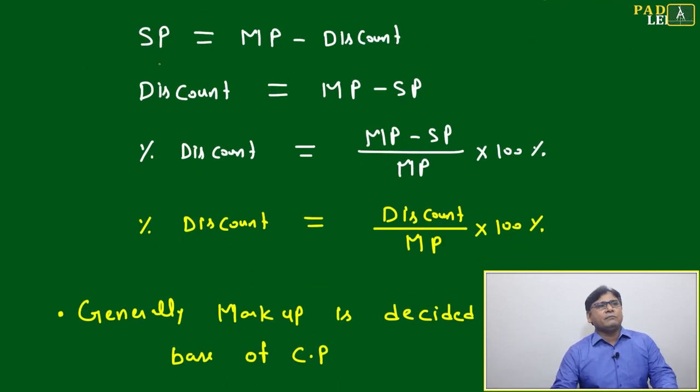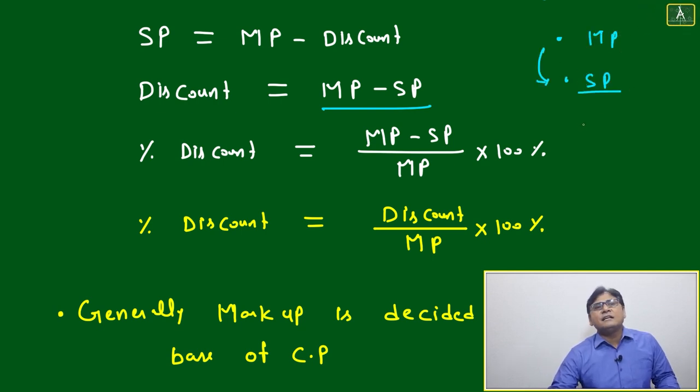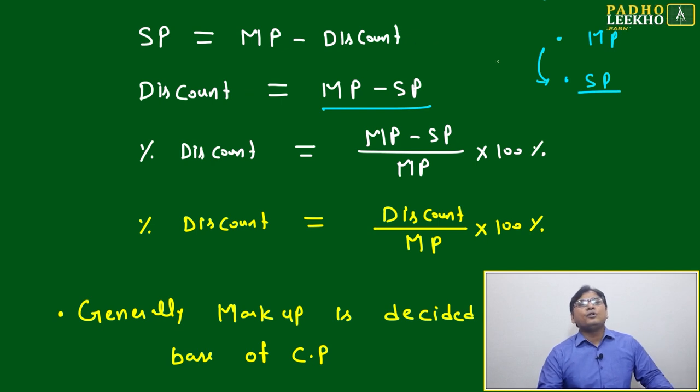Then simply we will write in equation: Selling Price equals Marked Price minus Discount. Then Discount, you can say, is the difference between Marked Price and Selling Price. How much was your marked price? How much you came down to sell the product as a selling price? That will be equal to your discount.